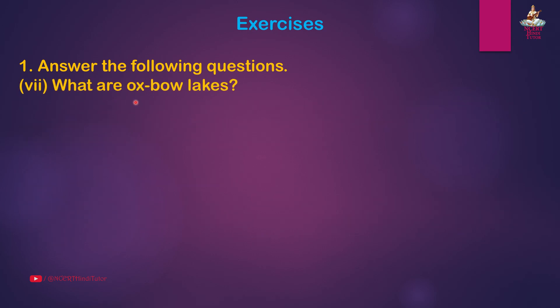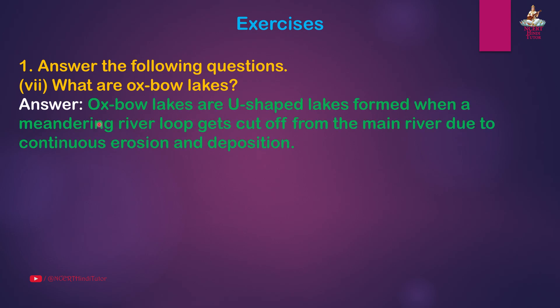Question 7: What are oxbow lakes? Answer: Oxbow lakes are U-shaped lakes formed when a meandering river loop gets cut off from the main river due to continuous erosion and deposition.